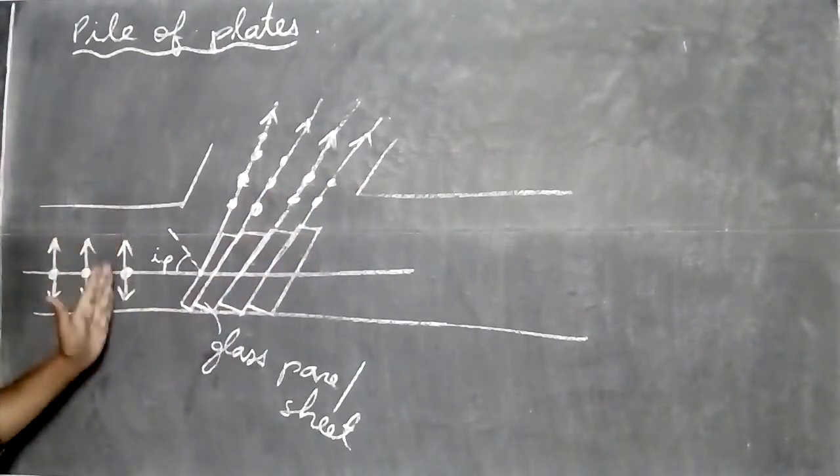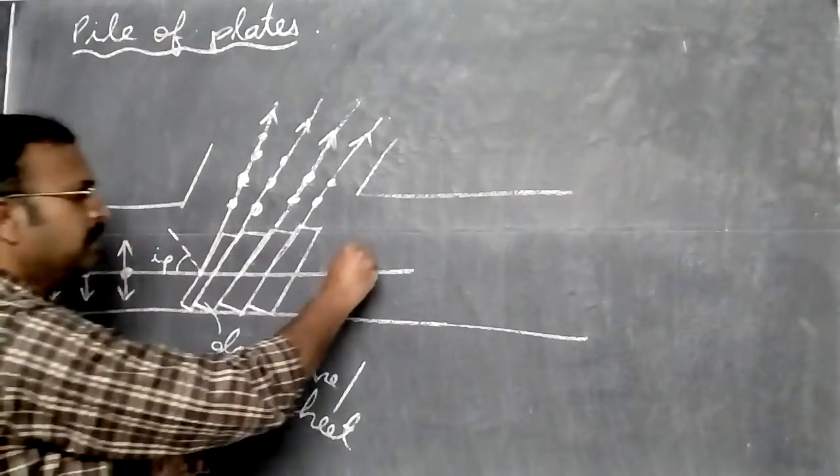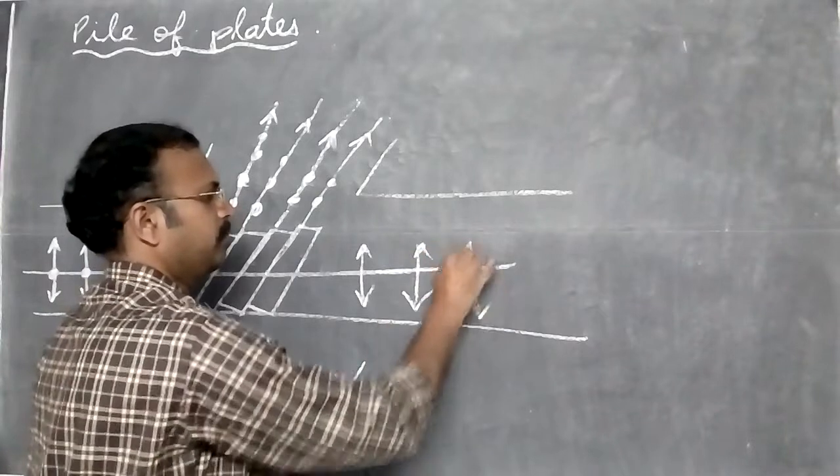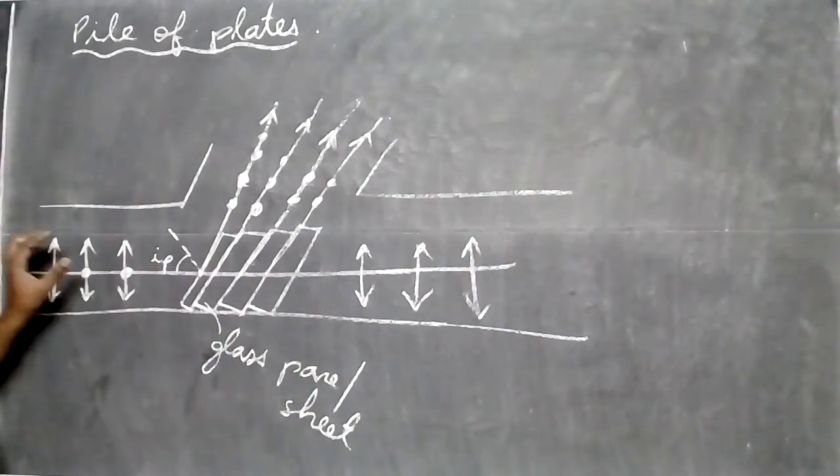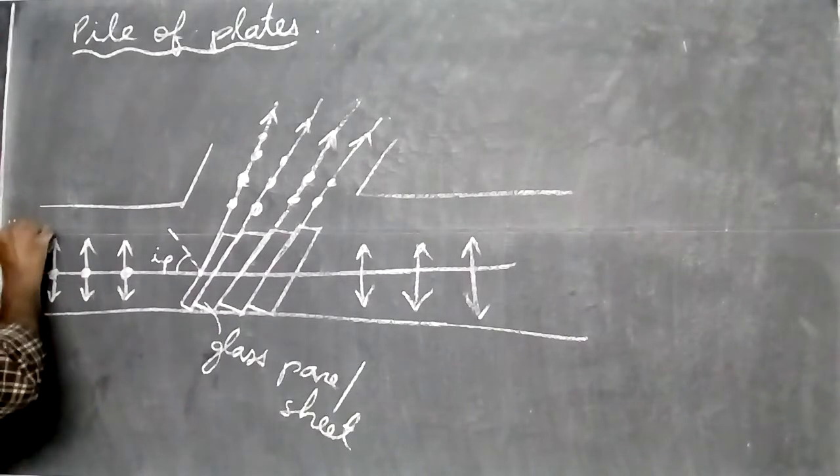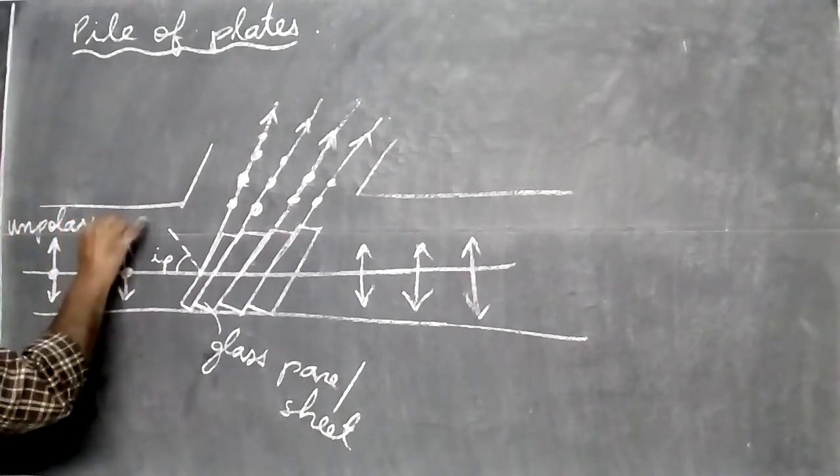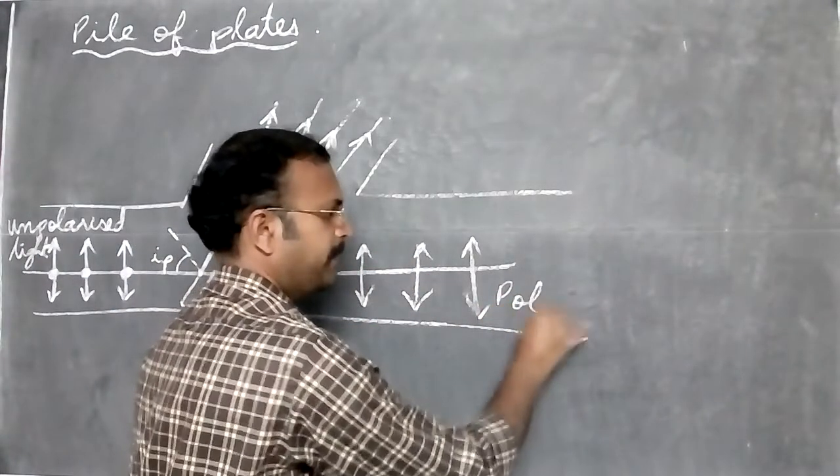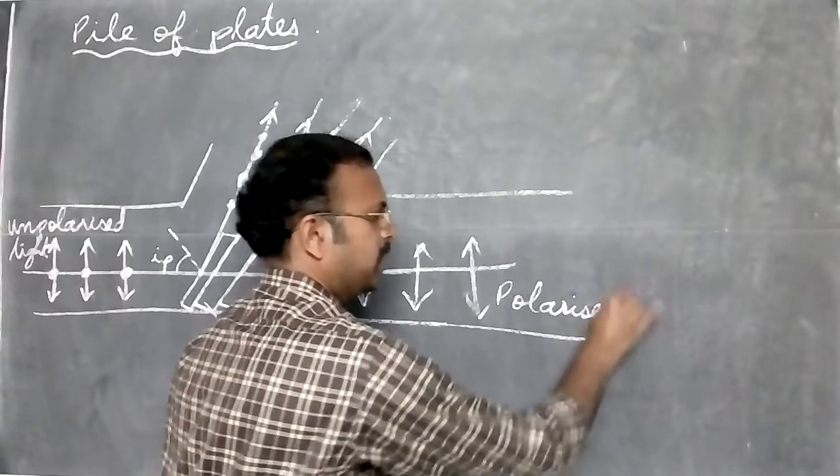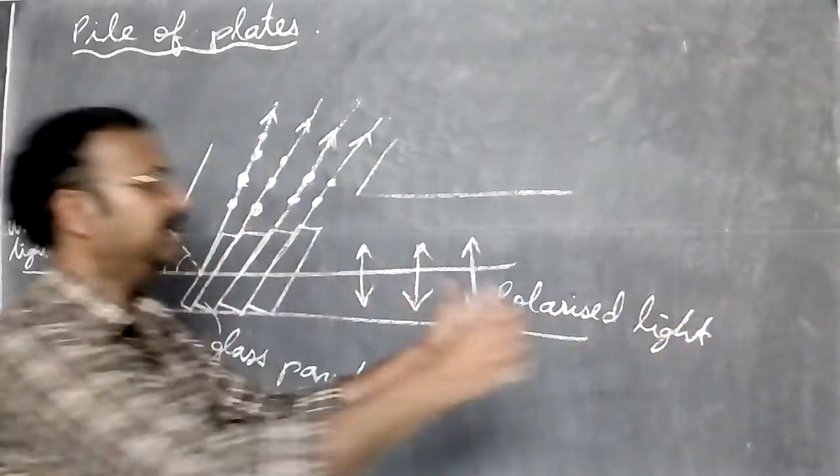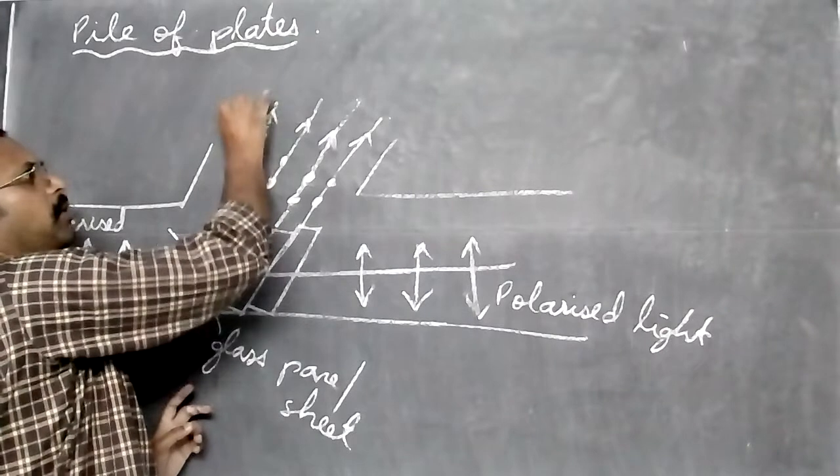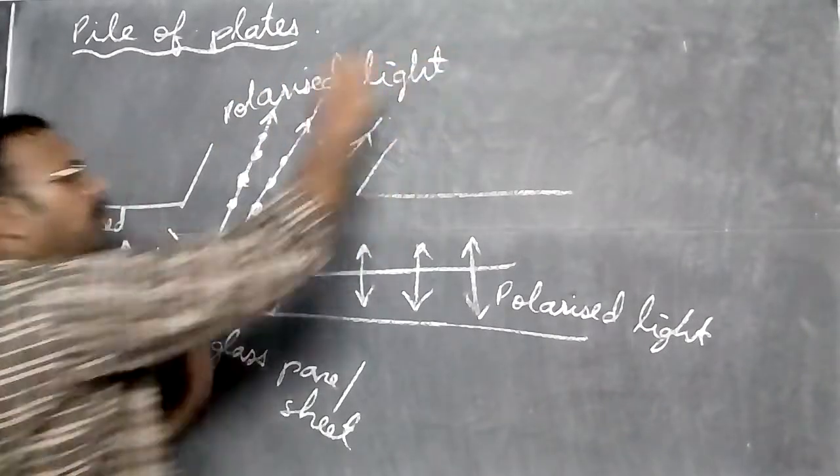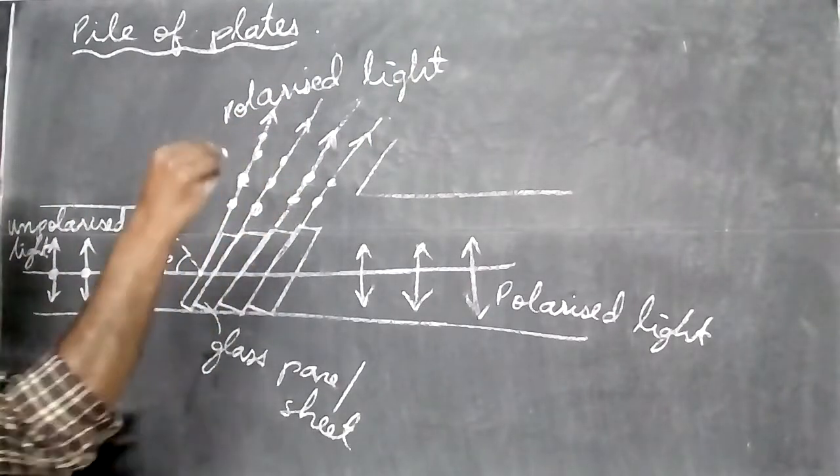Next we see what happens to the component which vibrates along this direction. This light ray will pass through. The unpolarized light is sent in, but outside what we're getting is polarized light. This is the transmitted ray and this is the reflected ray, and both are polarized. That means light vibrates only in one plane.